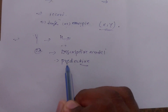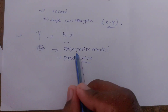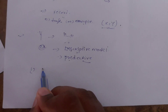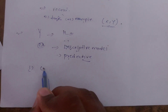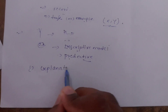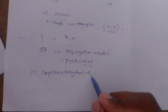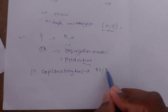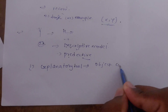The first type is descriptive modeling and the second type is predictive modeling. We can use descriptive modeling as an explanation tool. The difference between objects and classes is described through this model.